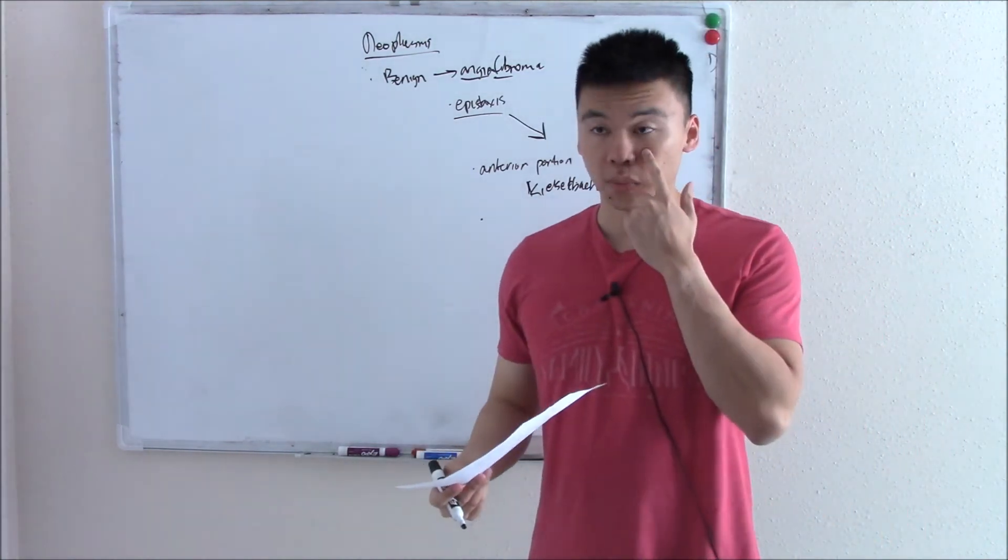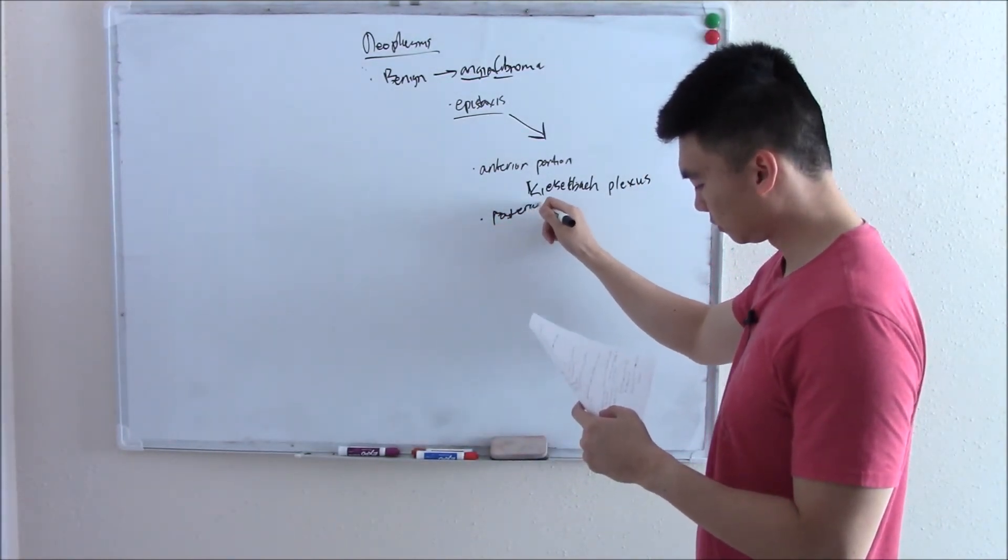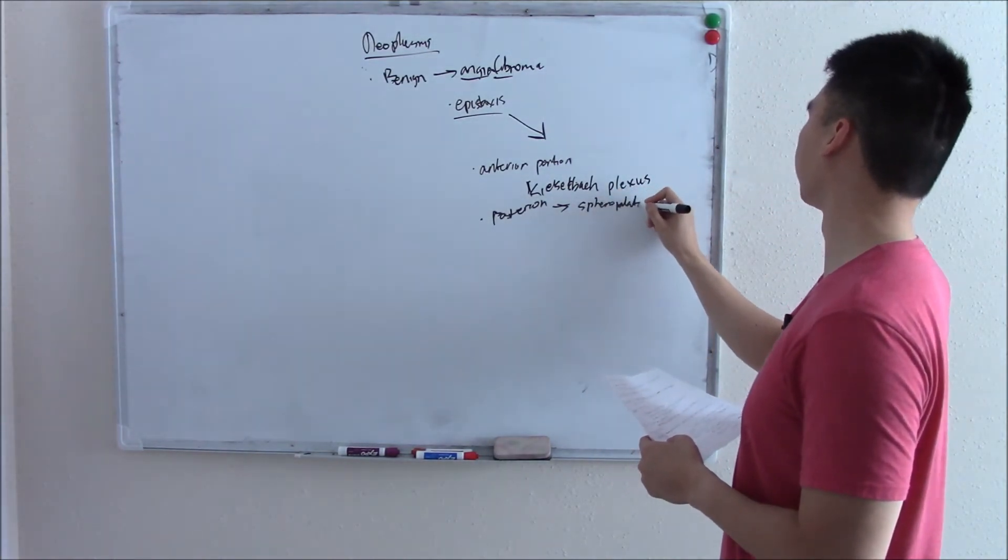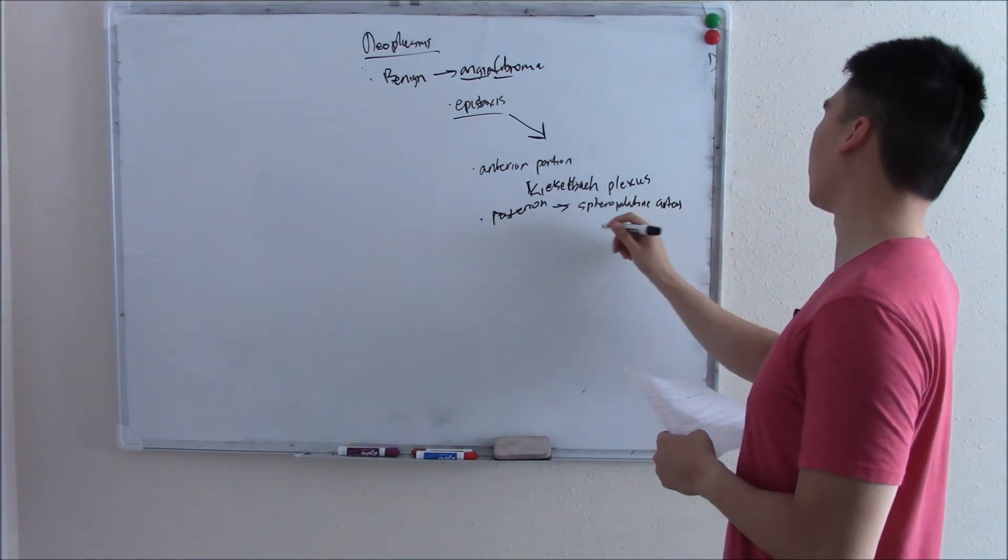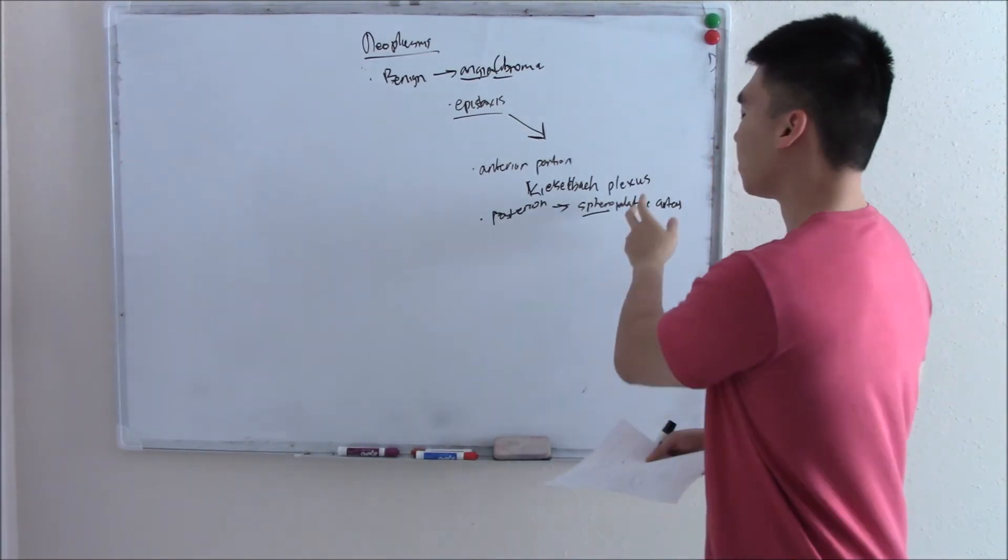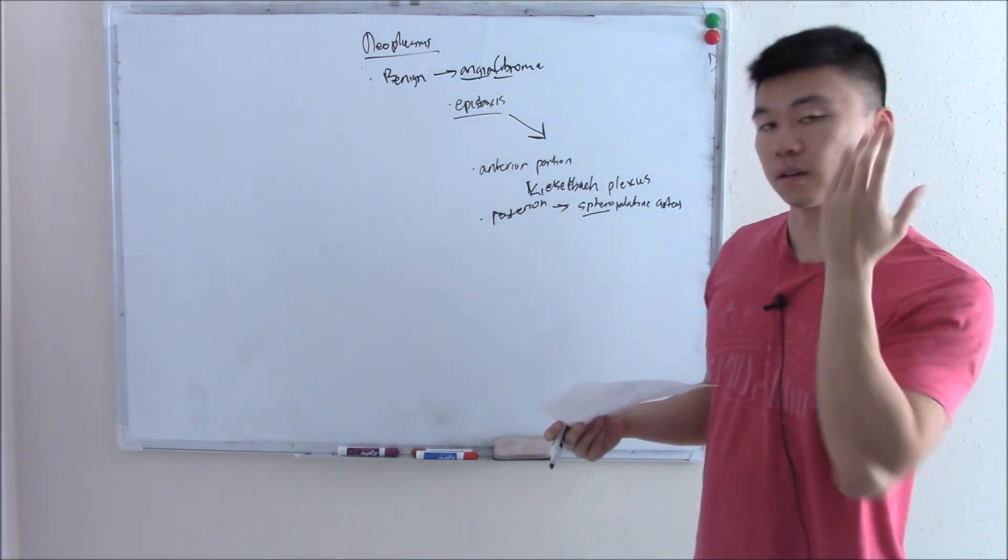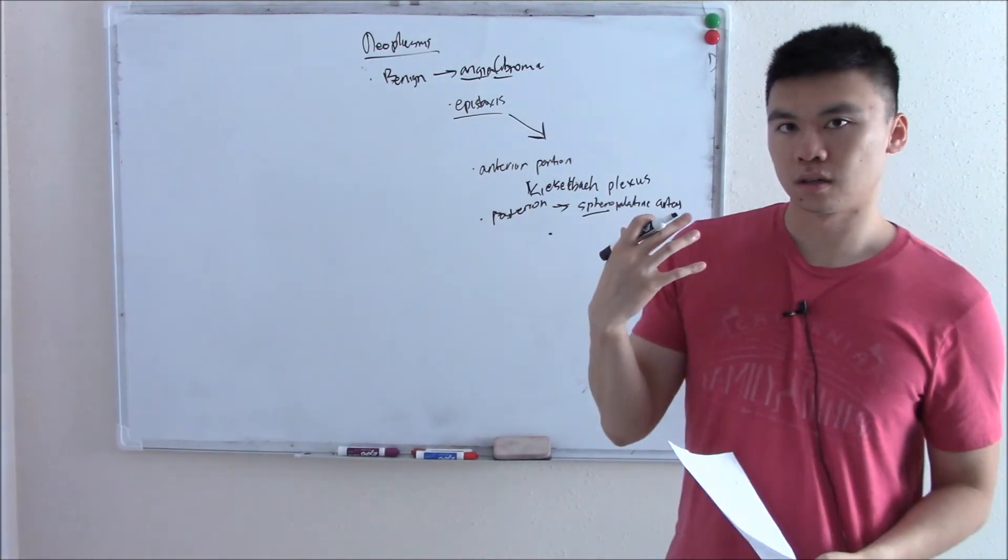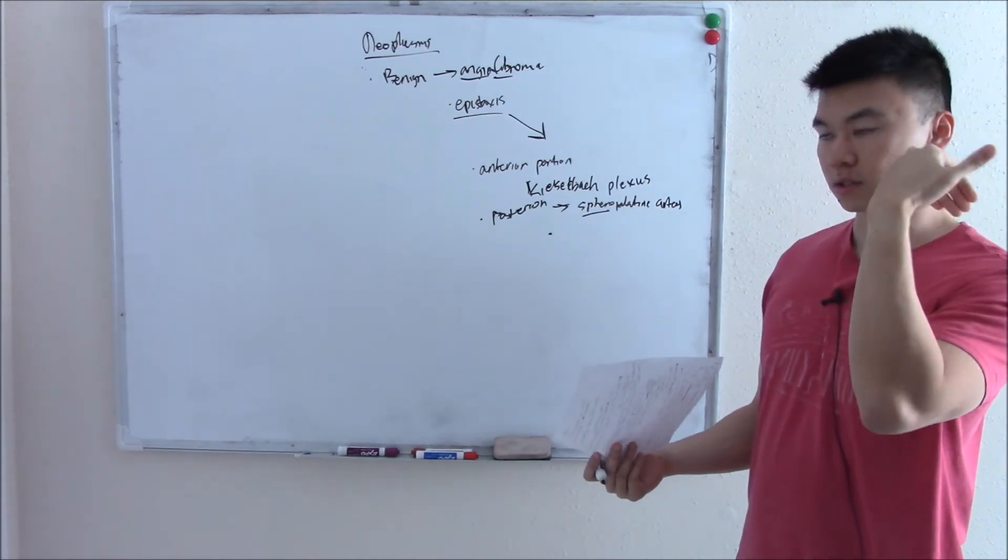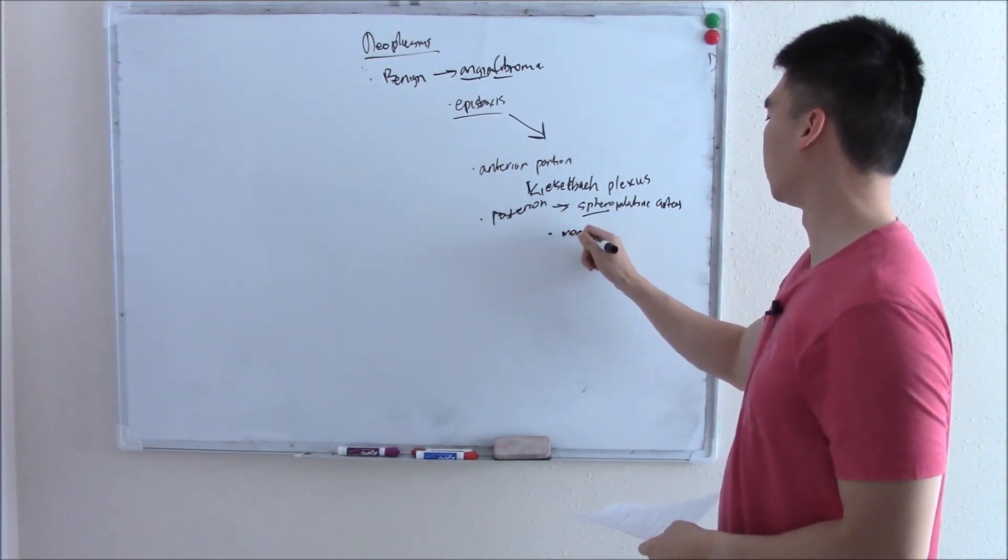Rarely you can dig into the posterior portion of your nose, the back of your nose. And this affects the vessel called your sphenopalatine artery. And that makes sense. Your sphenoid sinuses and your sphenoid bone is a little bit further back on your posterior side. And your palate is a little bit further back on your posterior side. So these are all vessels that are a little bit further back on your back wall of your nose. This is a lot more rare and a lot more dangerous because it's a little bit further back. It can go down your esophagus, your throat, your mouth. You can aspirate. You can choke on your own blood. So more dangerous.